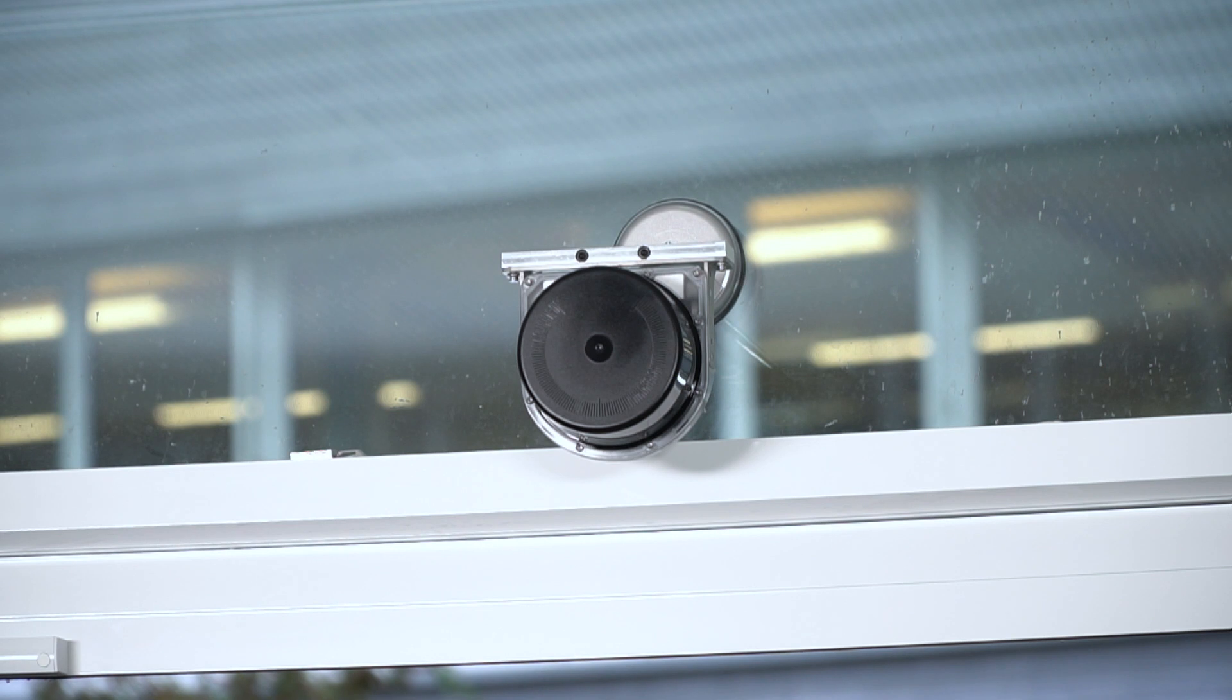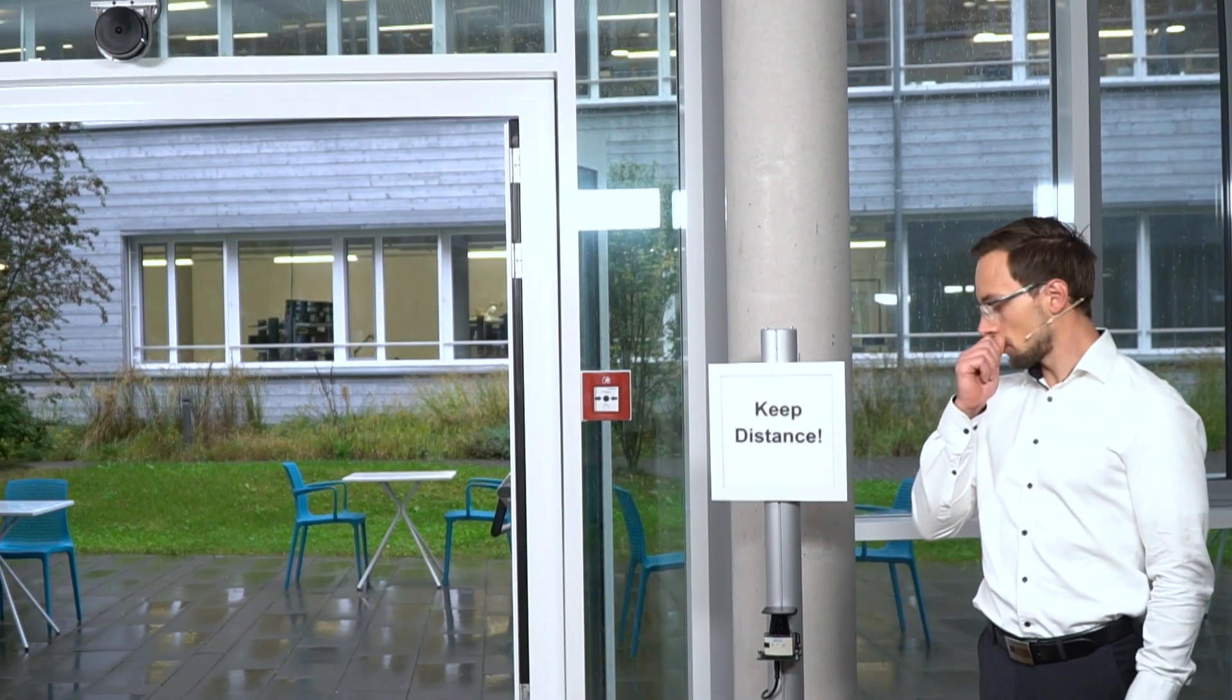Up here we have the PeopleCounter which is a device used for counting the number of people within rooms or certain areas. The other solution is the DistanceGuard which is helping people to keep their social distance to each other.